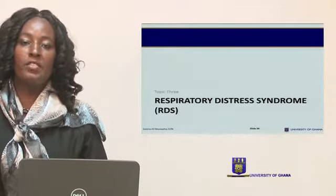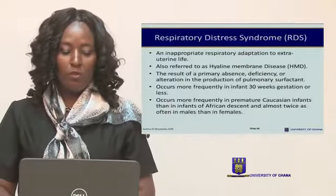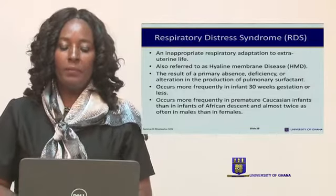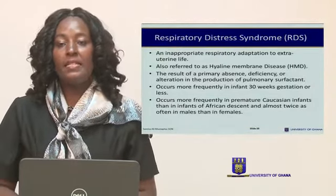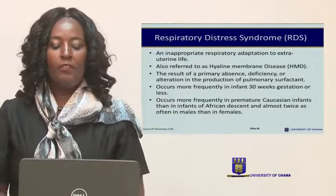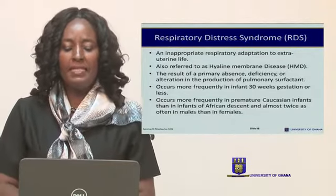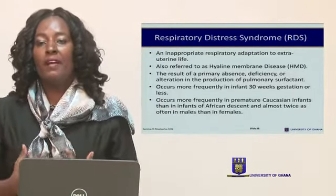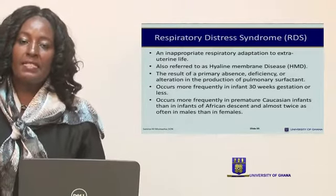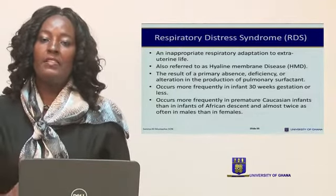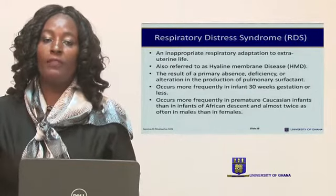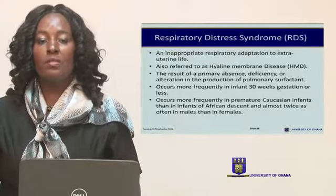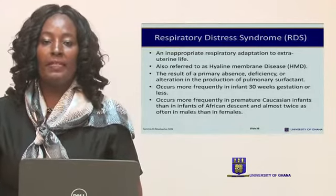Now we look at respiratory distress syndrome, which is also common. This refers to inappropriate respiratory adaptation in extrauterine life, also called hyaline membrane disease. It involves deficiency in pulmonary surfactant. The levels of surfactant in the preterm infant are very minimal due to underdevelopment of the lungs, and this condition occurs more frequently in infants less than 30 weeks of gestation.